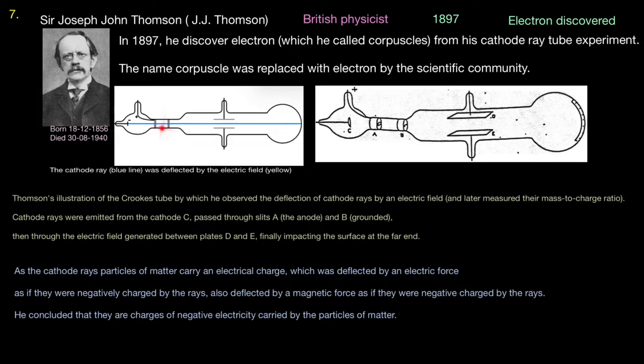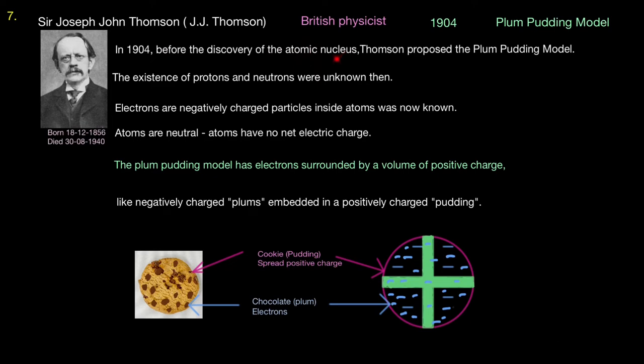In 1904, before the discovery of atomic nucleus, Thomson proposed the Plum Pudding Model. The existence of protons and neutrons were unknown then. Electrons were negatively charged, as he discovered. Particles inside atoms were now known. Atoms are neutral. Atoms have no net electric charge. The Plum Pudding model has electrons surrounded by a volume of positive charge, like negatively charged plums embedded in a positively charged pudding. If you think of that as a cookie, and the cookie is the pudding, and inside the cookies are these chocolate chips here, there's chocolate, and they are the plums, and the plums are the electrons. But the pudding is the spread positive charge. So everywhere is positive charge. Bringing that positive charge will be weak, because it's evenly spread everywhere. So you've got positive charge everywhere, and also you've got the electron here, but these are weak positive charge.